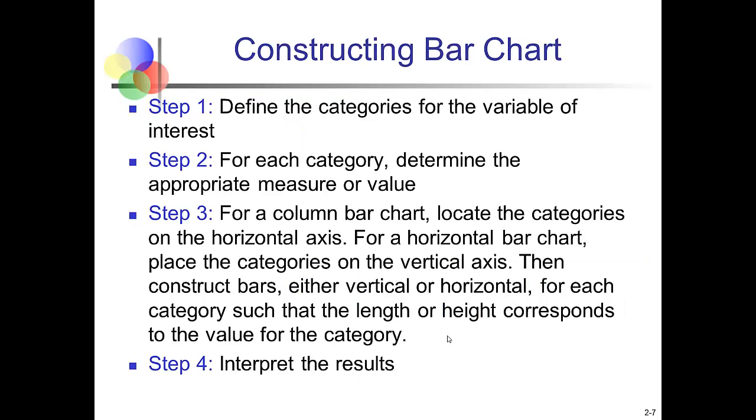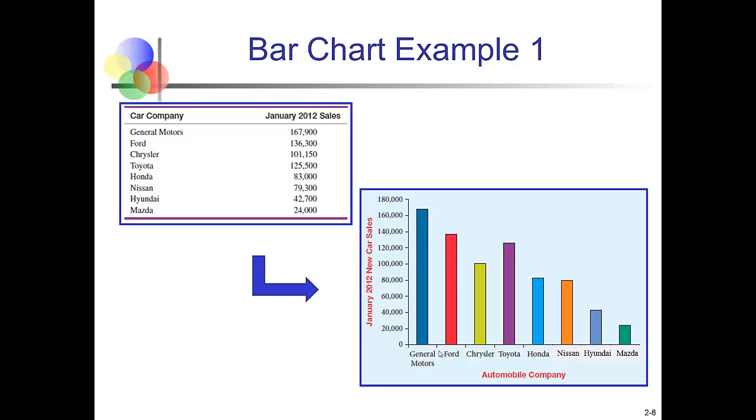How do we create a bar chart? Well, we start by defining the categories of interest. So in the last slide, we were looking at the different automobile manufacturers. We treated each of them as if it was the category we were interested in knowing about. For each category, determine an appropriate measure. In the last slide, we were trying to compare the sales figures across those different manufacturers. So we use the 2012 sales. If you're going to do a column chart like we just did, the categories go on the horizontal axis. For a horizontal bar chart, the categories would go on the vertical axis. And then the bars represent the values for each category. Then you would interpret the results. So we can see that GM had the most sales of any manufacturer in our list. You also notice that Mazda had the lowest sales.